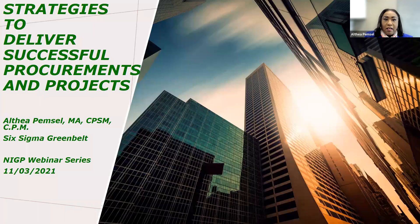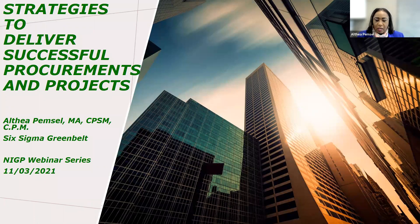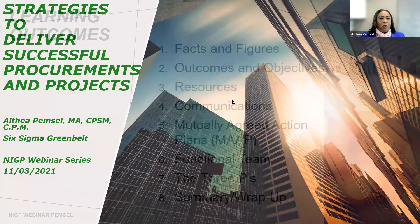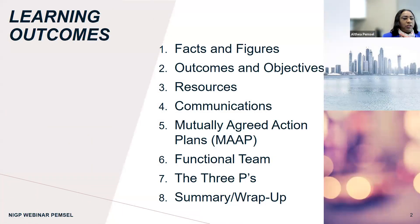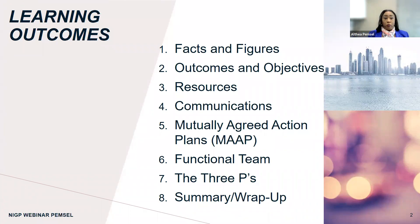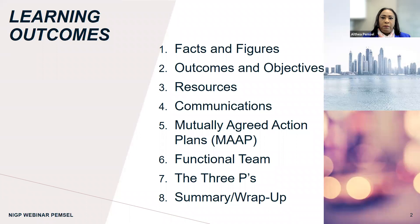Not enough staff. However, the goal here is to give you some strategies to be able to move forward in doing projects for your entity. So I thank you again for coming. First of all, we're going to go over some of the basics, which are facts and figures. We're going to talk about outcomes and objectives and deal with the resources needed when you're doing projects, communication, also agreed upon outcomes, how to deal with functional teams, and the three Ps overall.